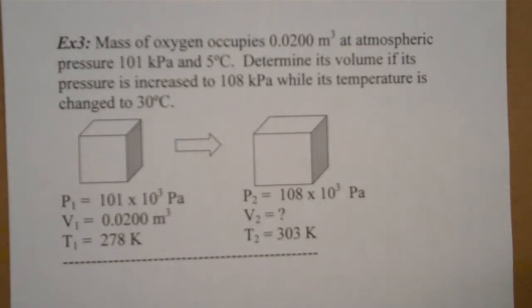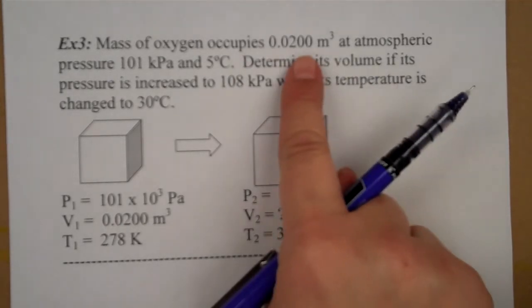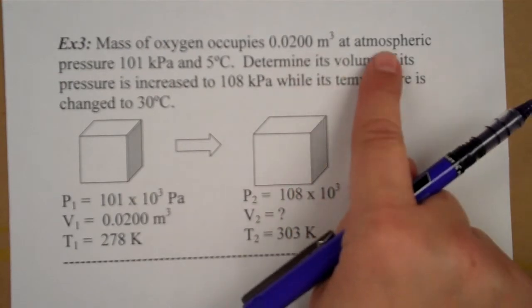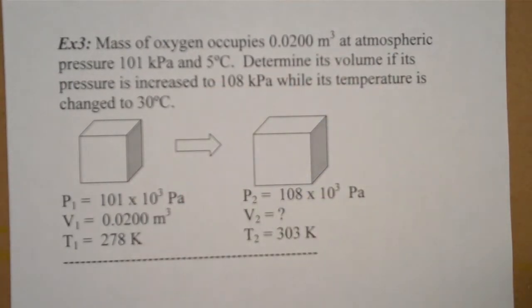So here's the first example we're going to use using the ideal gas law. We have a mass of oxygen occupying 0.0200 cubic meters at atmospheric pressure and we're given the temperature.